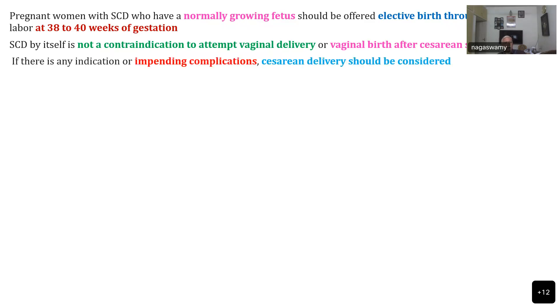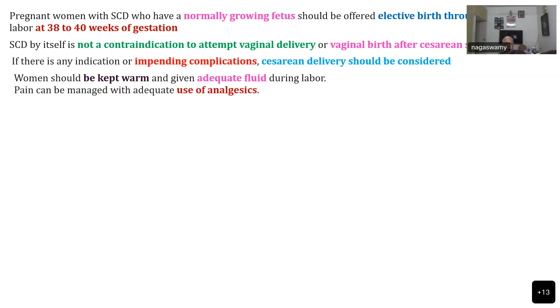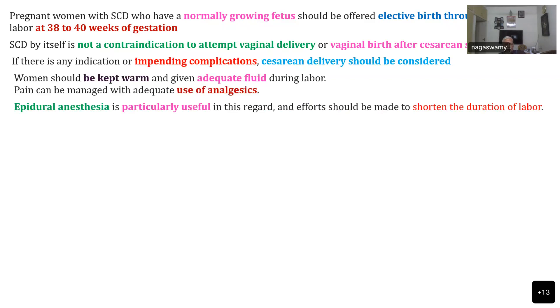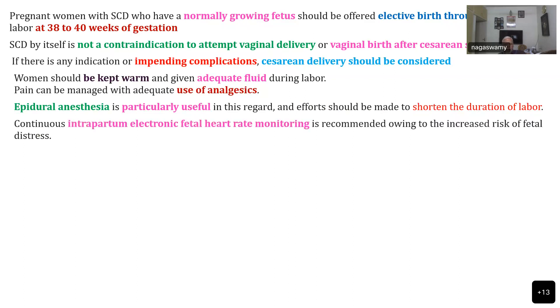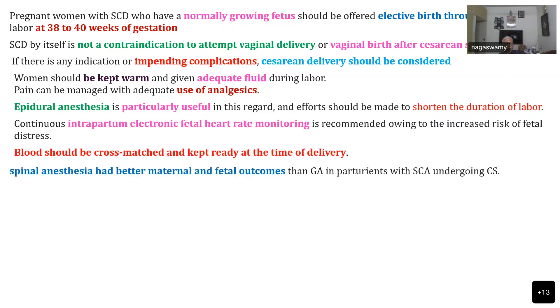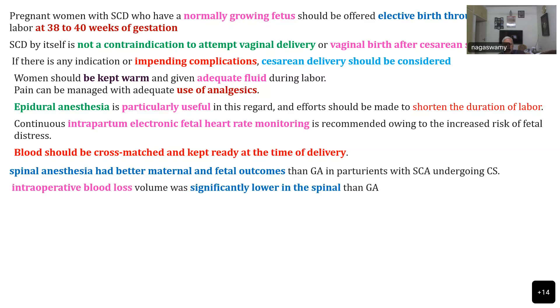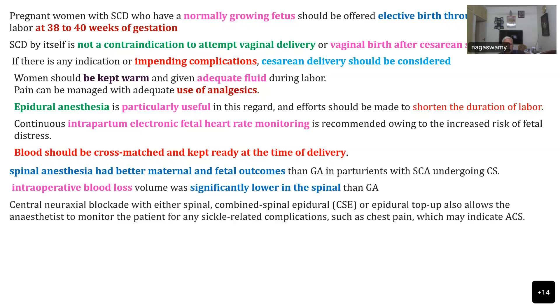If there is any indication for obstetric complications, caesarean can be considered. Women should be kept warm with adequate hydration. Analgesic pain control must be ensured if planning for normal vaginal delivery — epidural anaesthesia is very useful. You must shorten the duration of labour as much as possible by using oxytocin and other drugs. Continuous intrapartum electronic fetal heart monitoring is very important to assess fetal well-being. Blood should always be cross-matched and kept ready at the time of delivery for all patients with sickle cell disease.